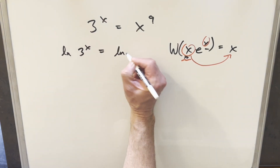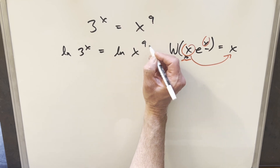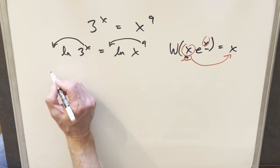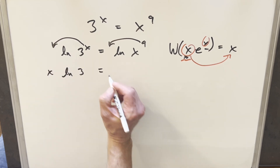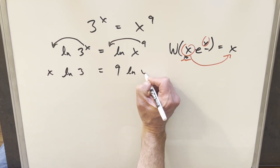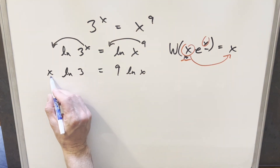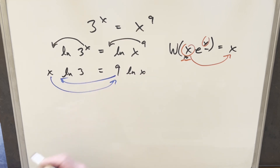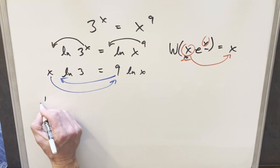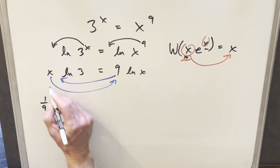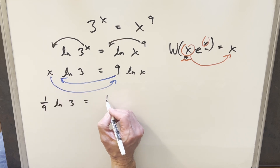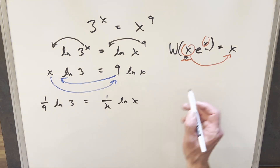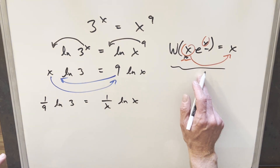We have natural log of 3^x equal to natural log of x^9. Moving the exponents out by log properties, we can rewrite this as x·ln3 = 9·ln(x). From here, I want to get all the x stuff on one side and all the numeric stuff on the other. So I'll divide by 9 on both sides to get (1/9)·ln3, and dividing the x over gives (1/x)·ln(x).